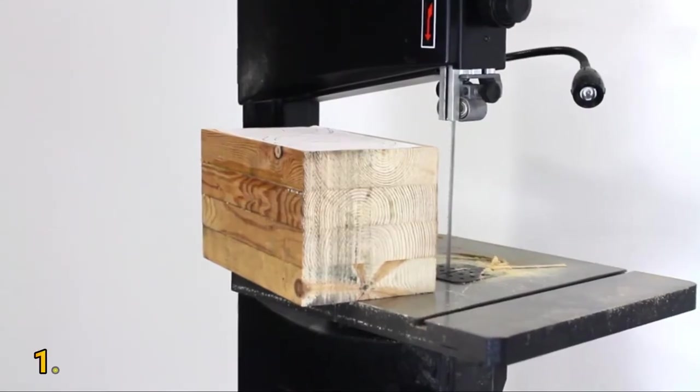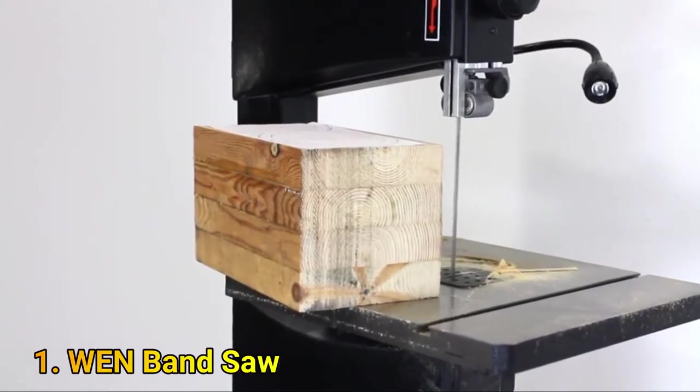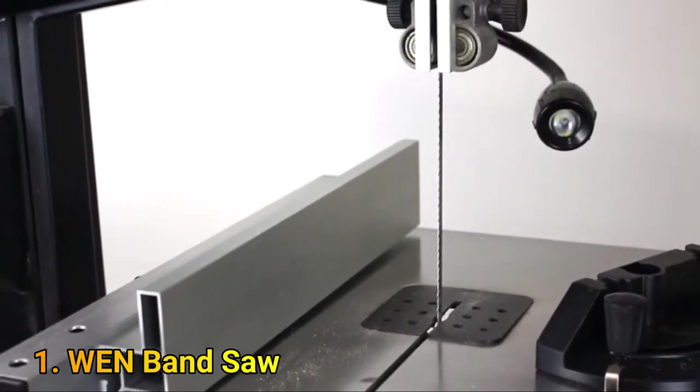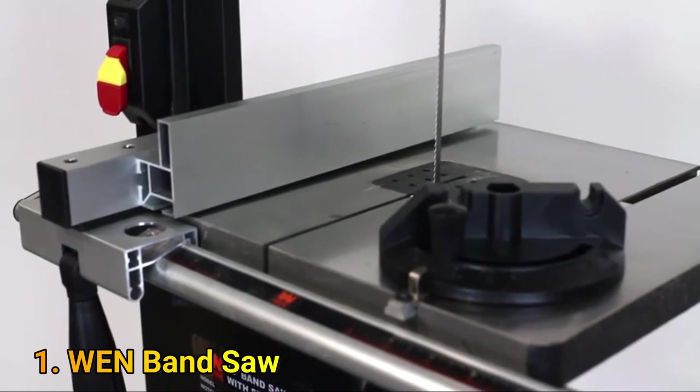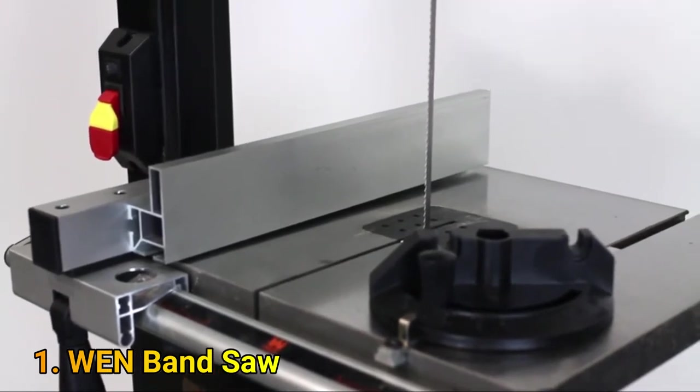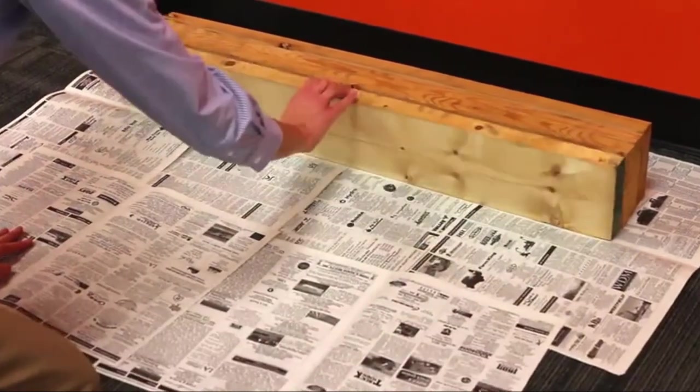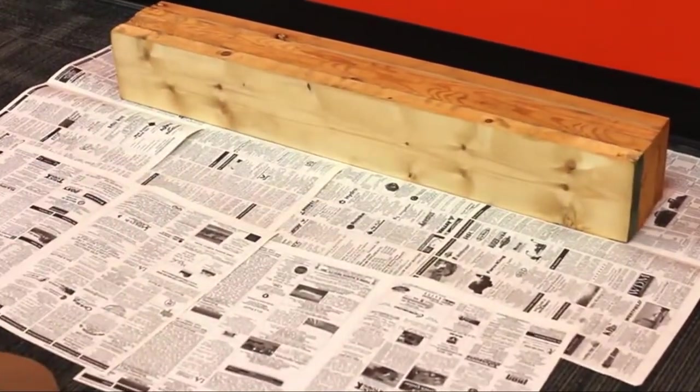First, I had to make a block of wood to construct the bandsaw box from. Because the Wynn 2 speed 10 inch bandsaw has the ability to cut depths of up to 6 inches, I decided to make a 10 by 6 by 6 inch block of wood as my starting point. If this is the size that sounds right to you, then grab four 2 by 6s to construct your own wooden block.